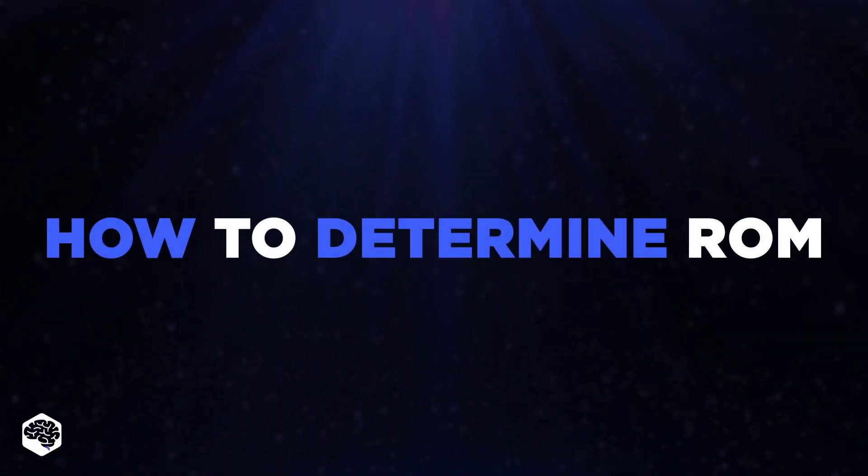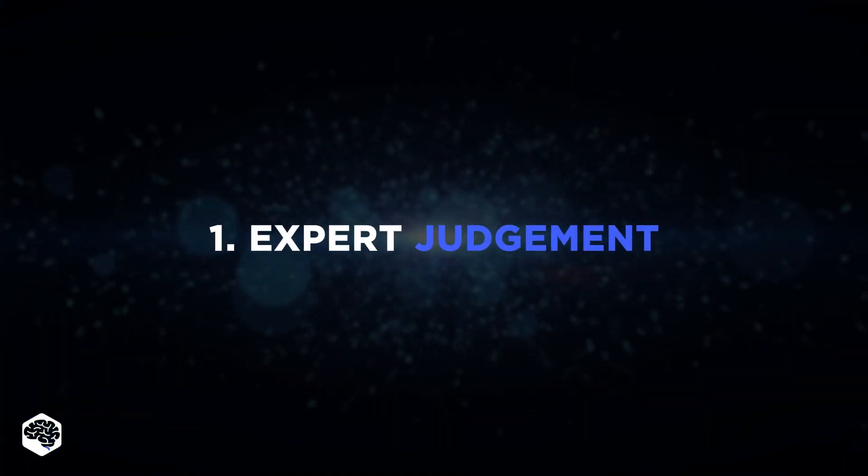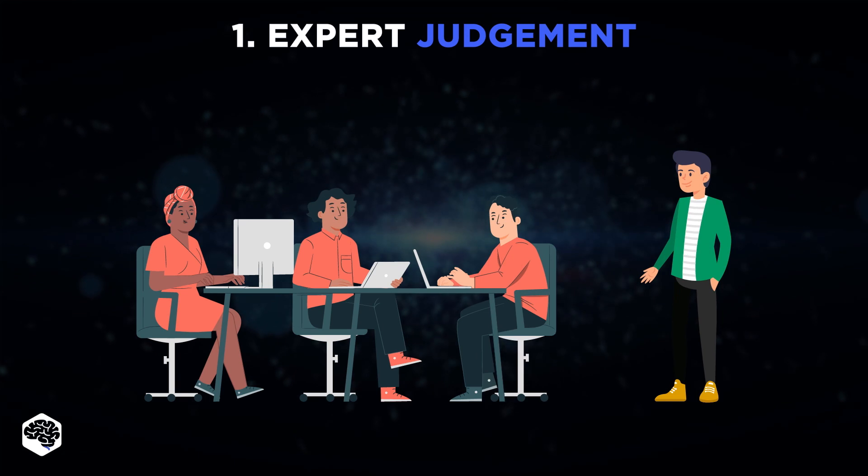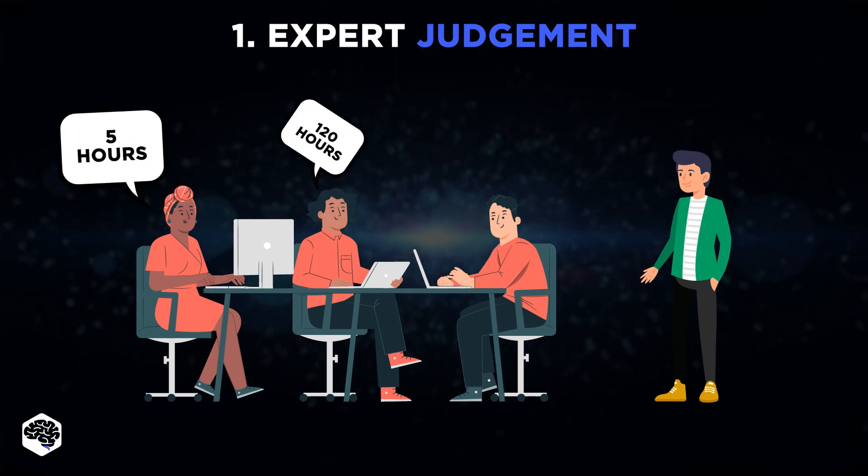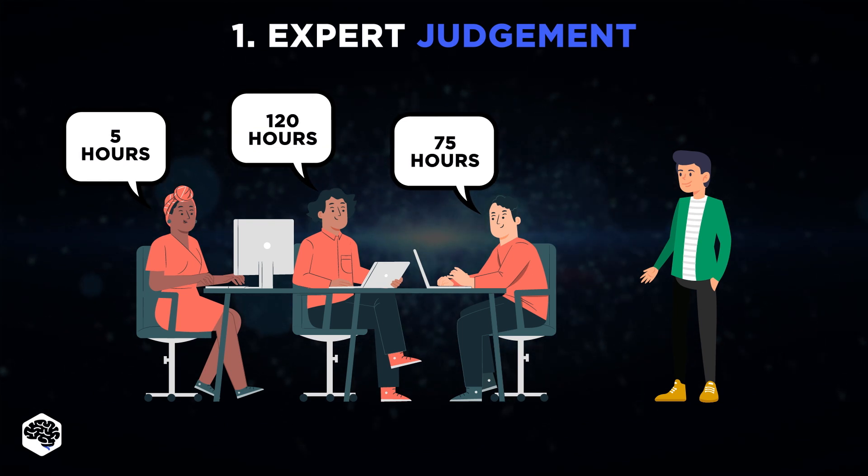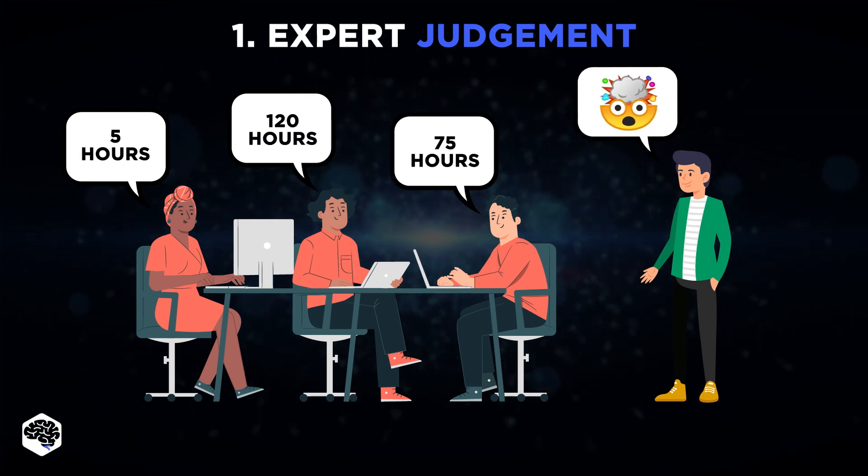Let's review how to determine the rough order of magnitude. The first method is Expert Judgment. If you and your team have experience with similar projects, you can use peer review, but its accuracy will depend on the team's knowledge, the clarity of the planned stages, and the project type.